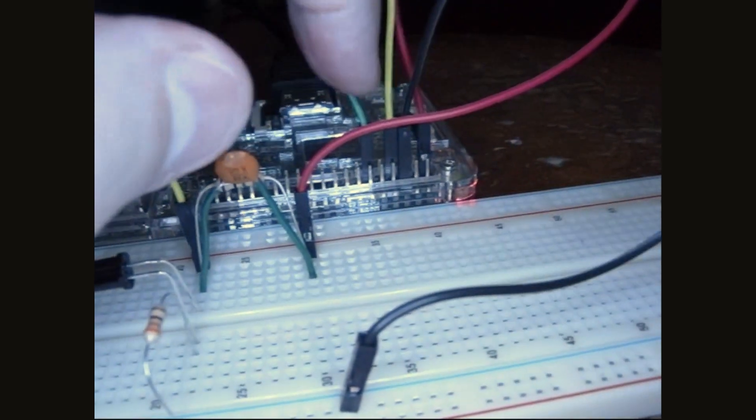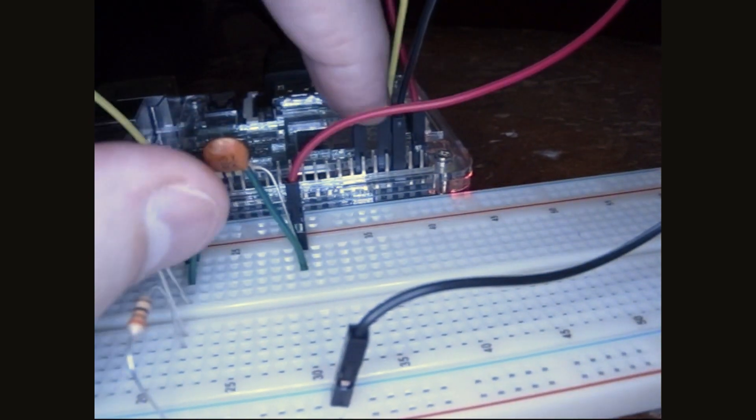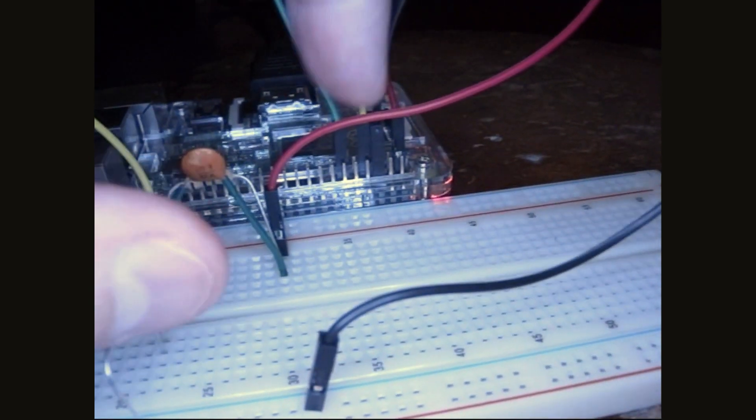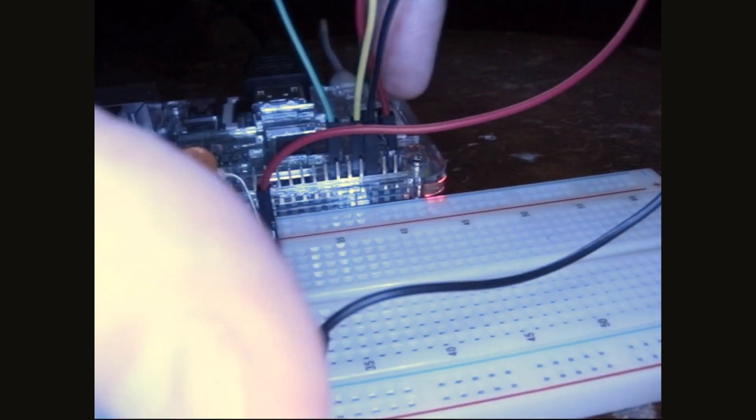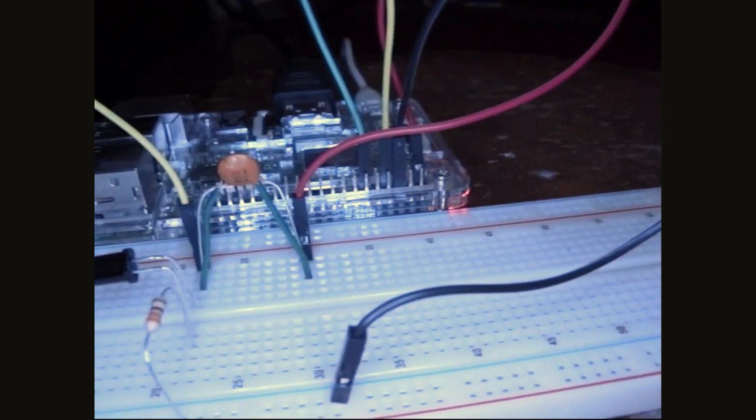You can see the color coding back here. The green wire is pin 11, the yellow wire is pin 7, the black wire is pin 6 which is the ground, and the red wire is pin 1 which is just the power, 3.3 power.